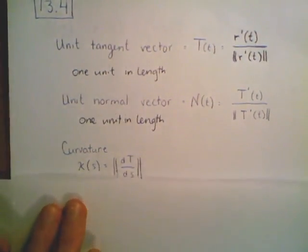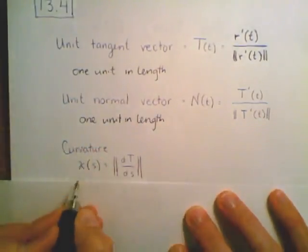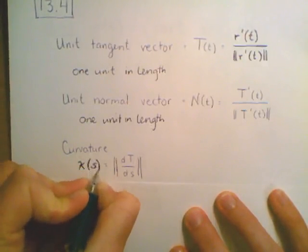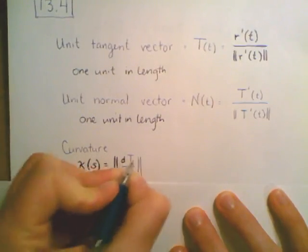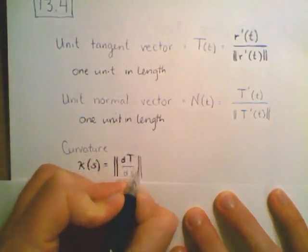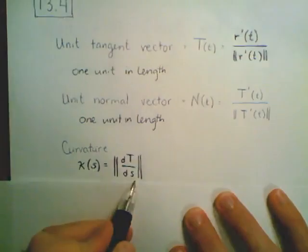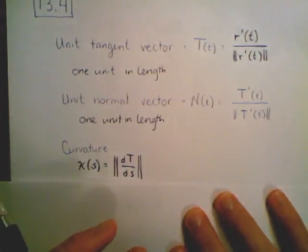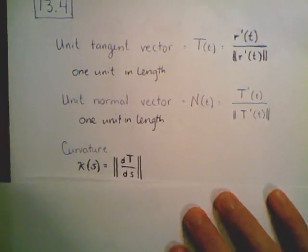The final concept is curvature. Intuitively, curvature — denoted kappa of s — is equal to the magnitude of the derivative of our tangent vector with respect to s. The s here means it is an arc length parameterization, where one unit of distance equals one unit of time.